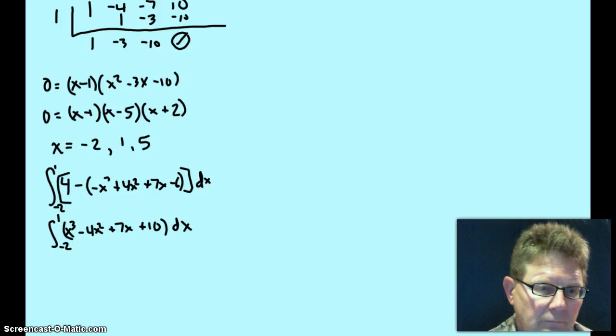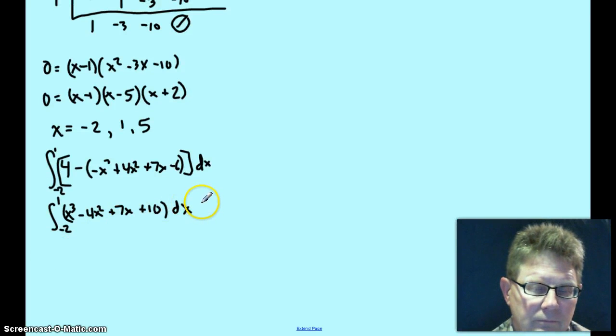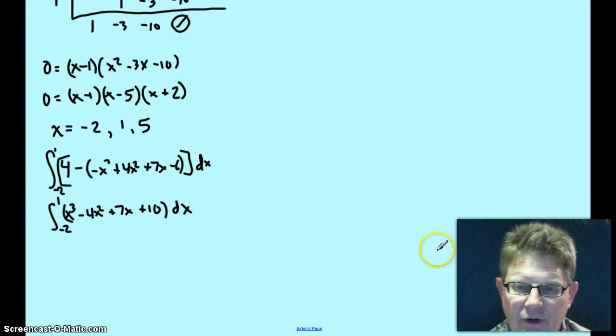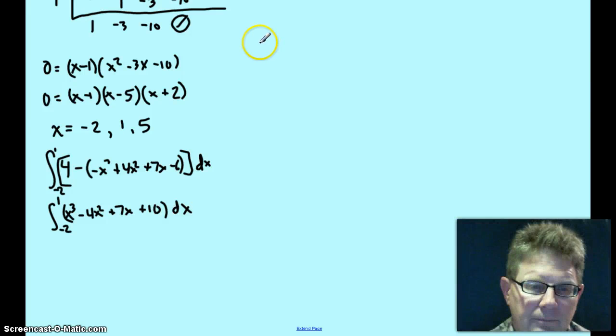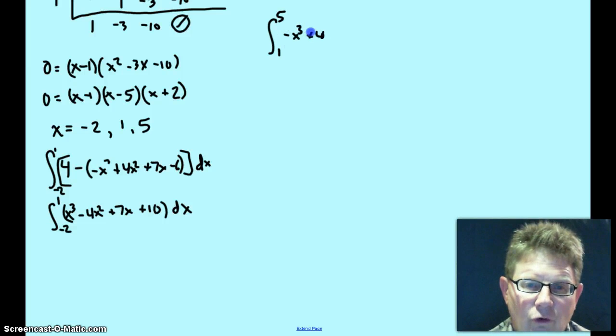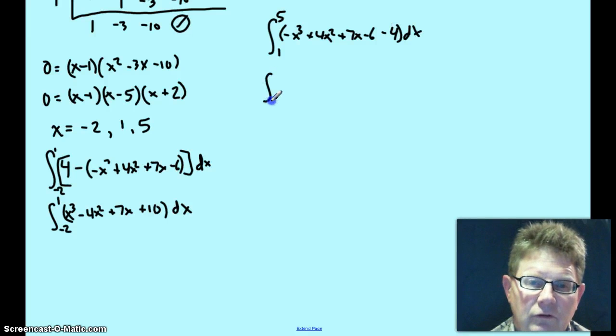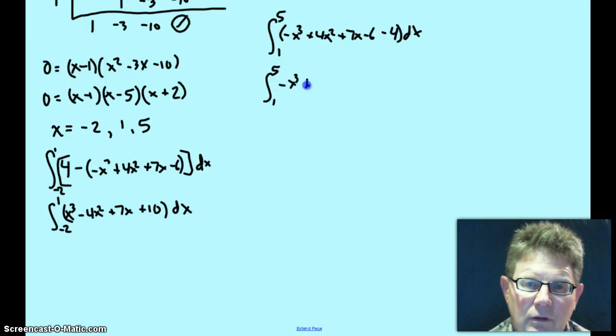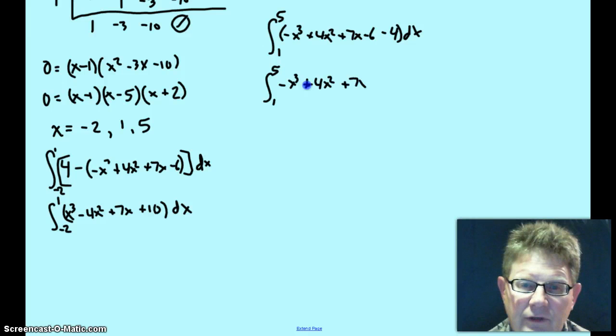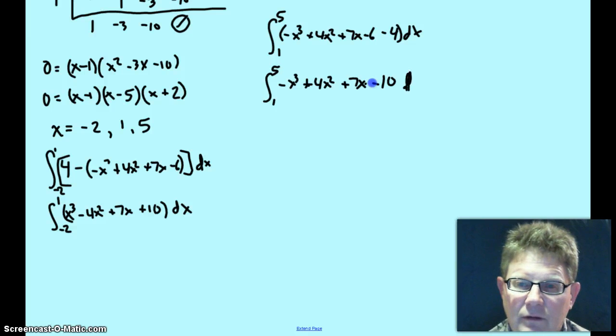The second part goes from... I'll put it up here. The integral from 1 to 5, negative x cubed plus 4x squared plus 7x minus 6 minus 4 dx. So, the second integral is 1 to 5, negative x cubed plus 4x squared plus 7x minus 10 dx.